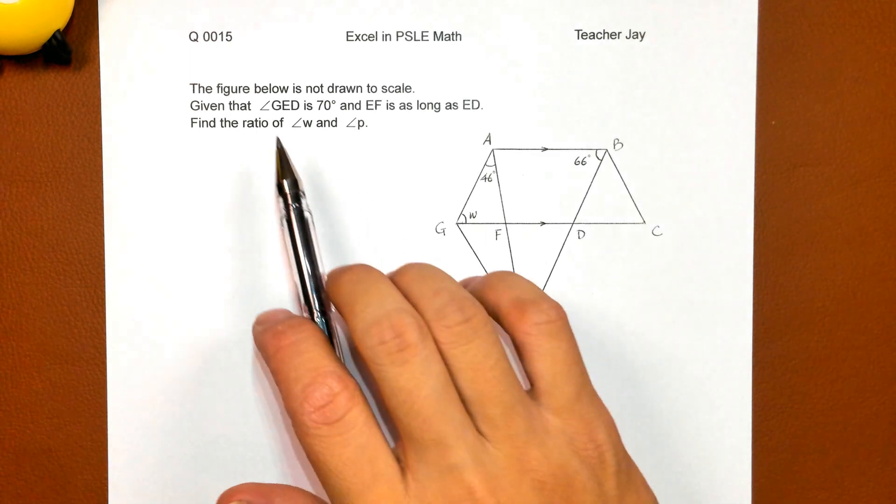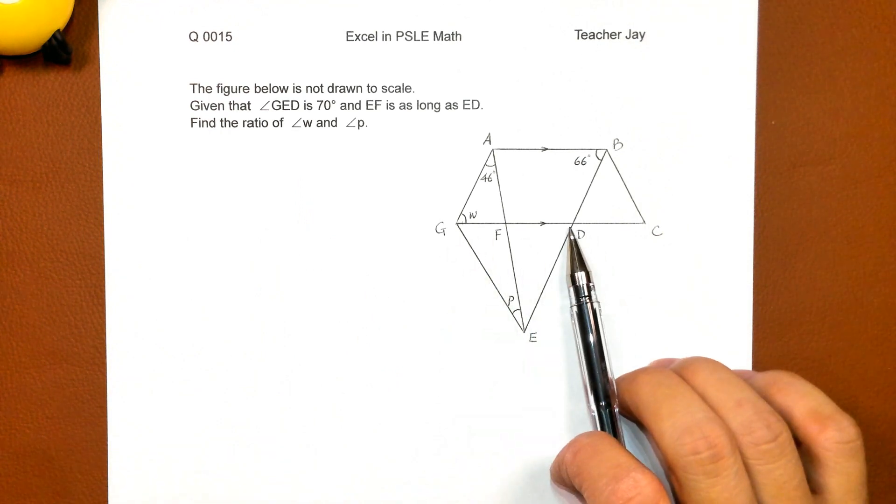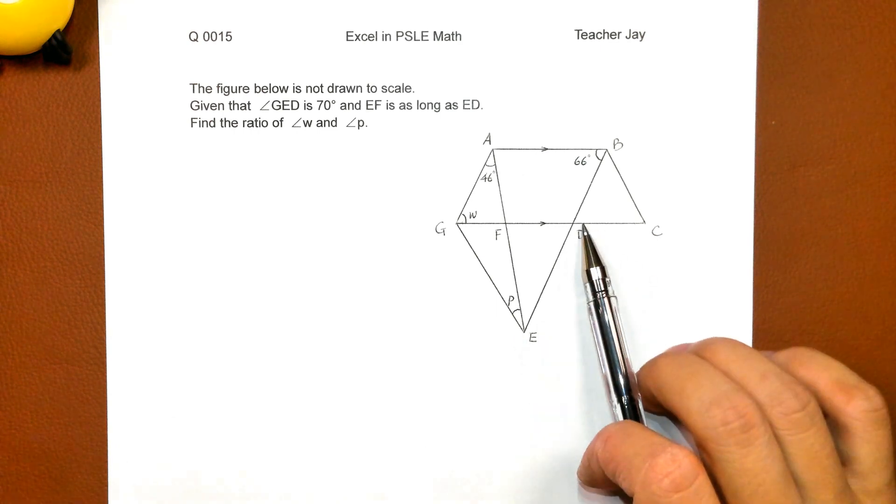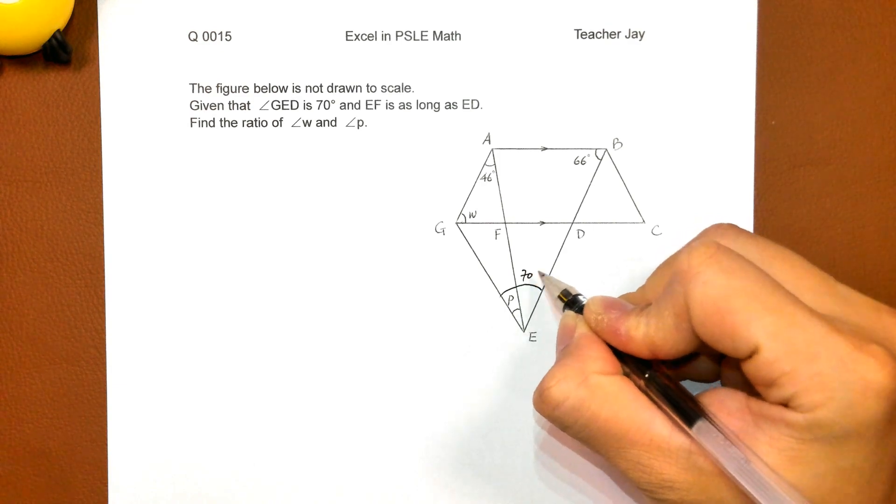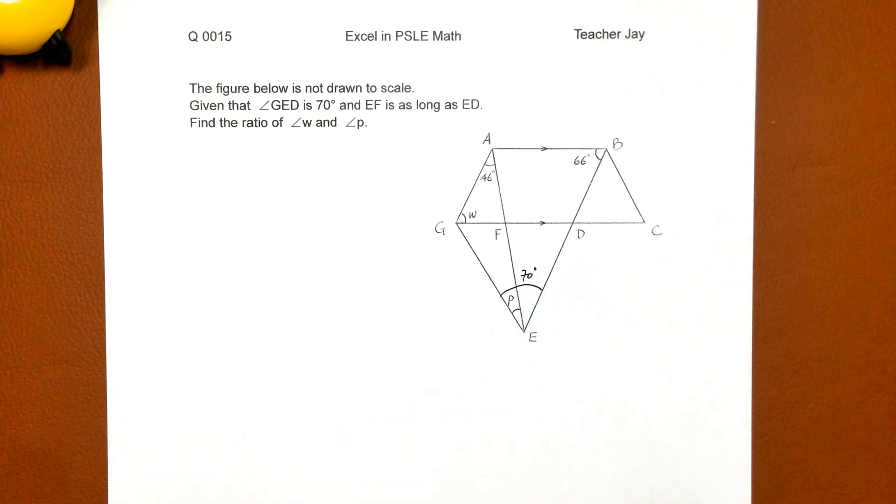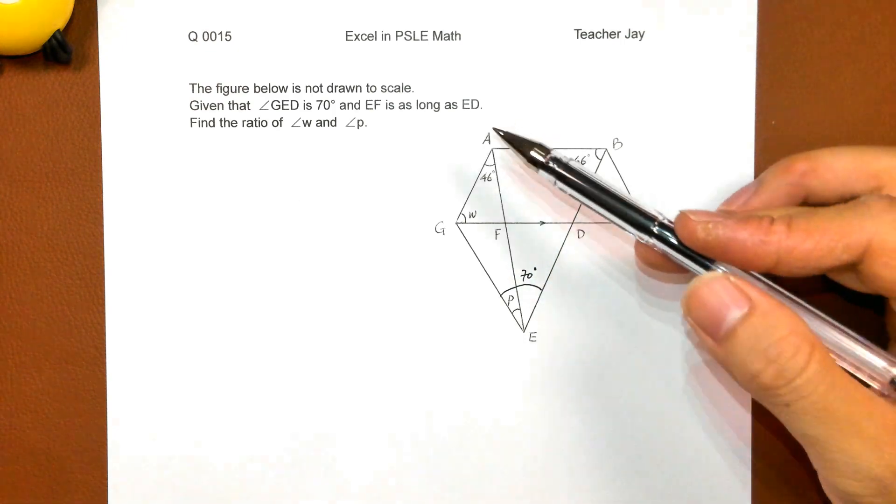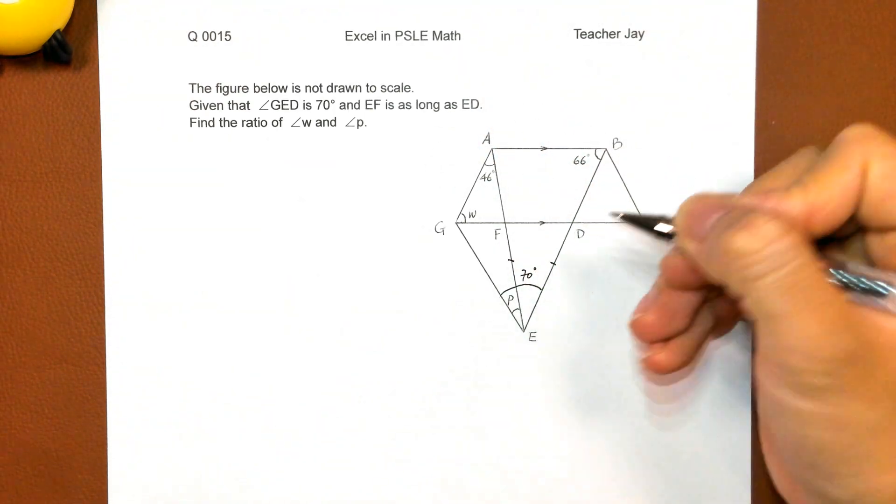Given that angle GED is this big angle, 70 degrees, and EF is as long as ED. Not drawn to scale.